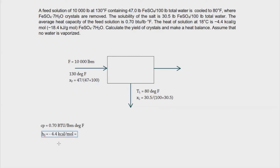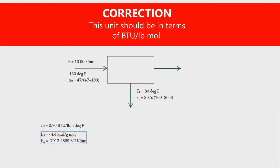To convert the heat of solution to English units, we multiply by 1,000 and divide by 252.16 calories per BTU, then convert the denominator from gram mole to pound mole. This gives negative 7,913.4869 BTU per pound mole. Since the heat of crystallization equals the negative of the heat of solution, H sub C equals positive 7,913.4869 BTU per pound mole.